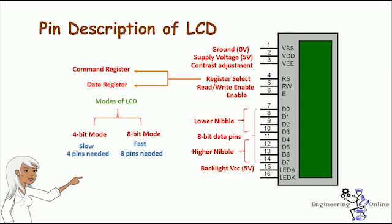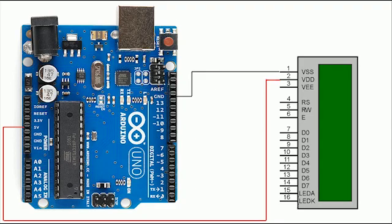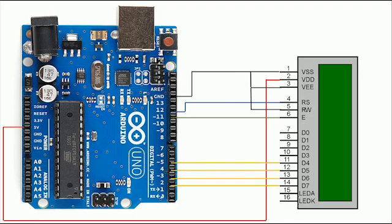Pin 15 and 16 are the positive and negative connections of the backlight — connect pin 15 to positive 5 volts and pin 16 to 0 volts. For the connection diagram: connect pin 1 to ground, pin 2 to 5 volts, pin 3 to ground. Connect the register select pin to pin 12 of Arduino, the read/write pin to ground, and the enable pin to pin 11 of Arduino. Connect LCD pins 11, 12, 13, and 14 to Arduino pins 5, 4, 3, and 2. Connect pin 15 to 5 volts and pin 16 to ground.